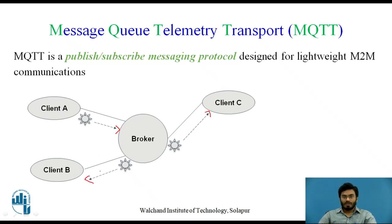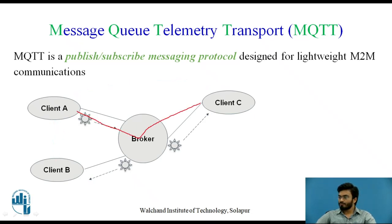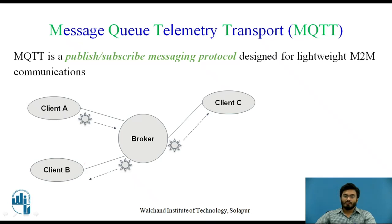There are two important things to note. Whenever a client wants to talk with another client — for example, client A wants to talk with client C or client B — it is not directly possible. Communication must happen only through the broker. This is how things generally work in MQTT. Wherever you have a client-server based logic, the broker must be working efficiently in between.